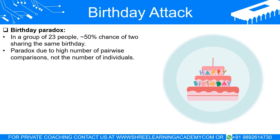This seems counterintuitive because with 366 possible days — accounting for leap years — you'd assume you'd need a group size approaching this number to have a 50% chance of a match. However, the probability of a matching birthday increases exponentially with each new individual added. Within a group of 23 individuals, there exist 253 distinct pairs, and this high number of comparisons greatly increases the chance of a shared birthday.